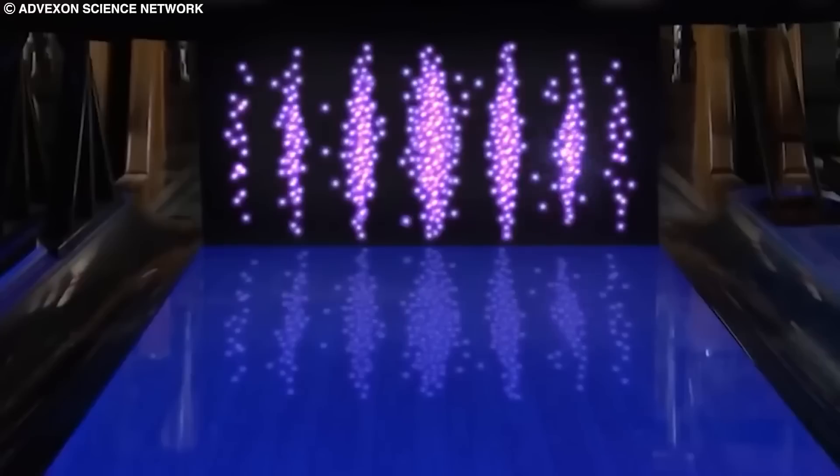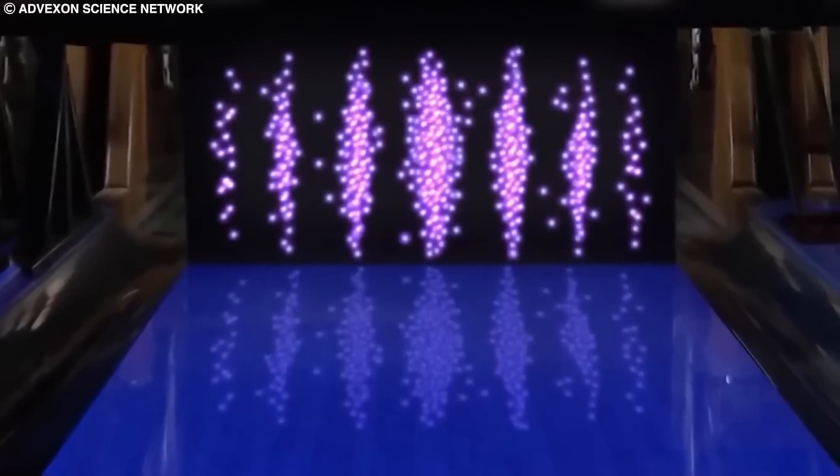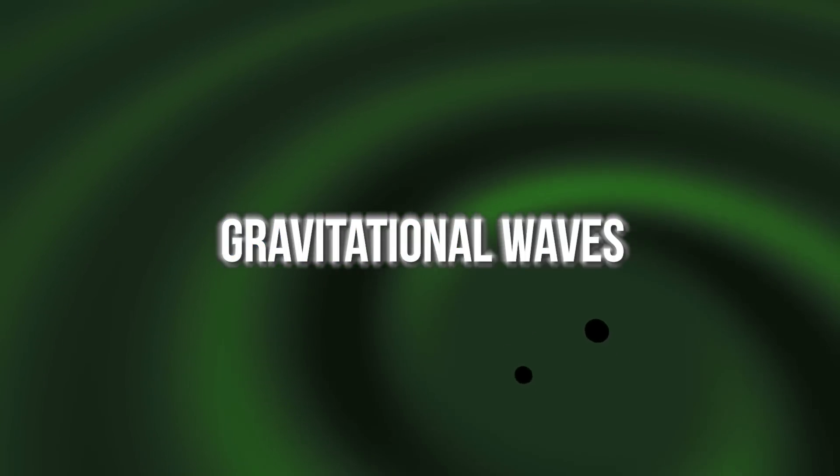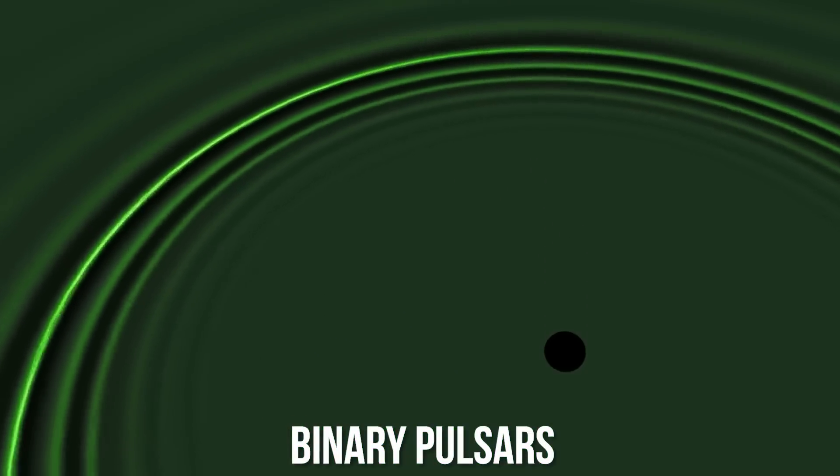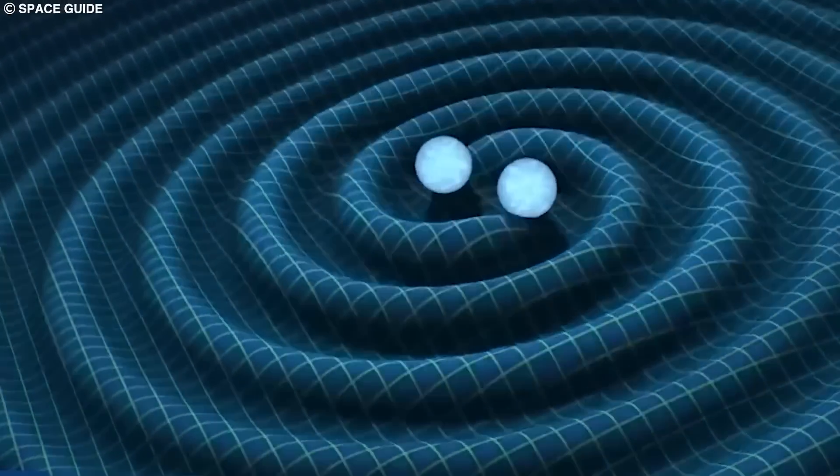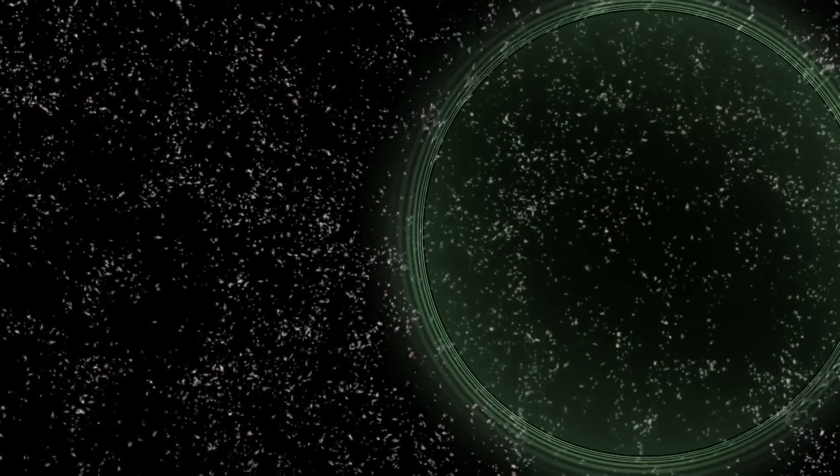However, there are things that we know are true even if we can't see them directly. Take gravitational waves for example. Even before we actually detect them, we knew that they had to exist because we could observe their effects on binary pulsars. These pulsars are two neutron stars that orbit around each other and appear to have shorter periods of revolution. We figured that something must be taking away their energy, and based on what we already knew, gravitational waves seemed like the most likely explanation.